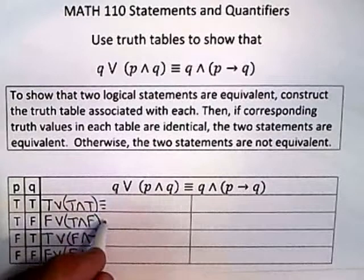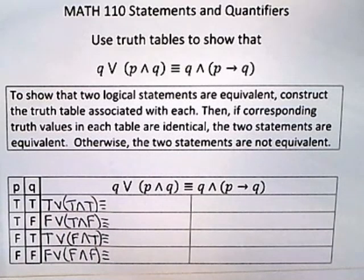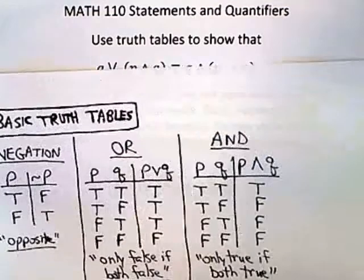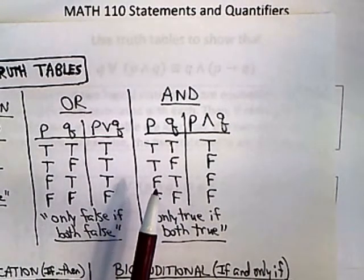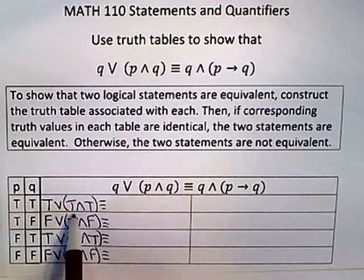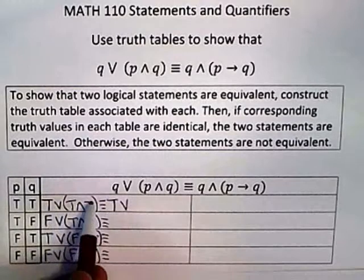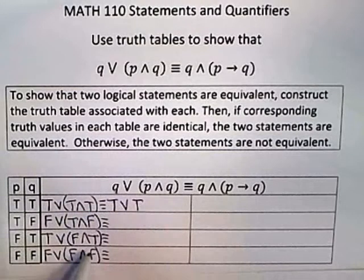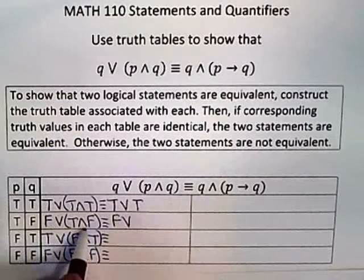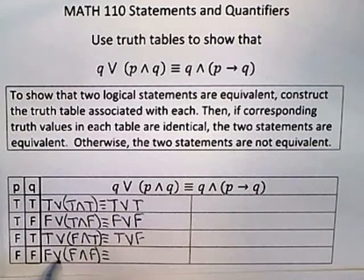Now I move back up and continue simplifying. Working inside the parentheses, this is an AND. The truth table for AND has only one case where it's true: if they're both true. So looking at that AND in parentheses — it's only true in the first case where both are true, giving true, false, false, false. So we end up with: true OR true, false OR false, true OR false, and false OR false.